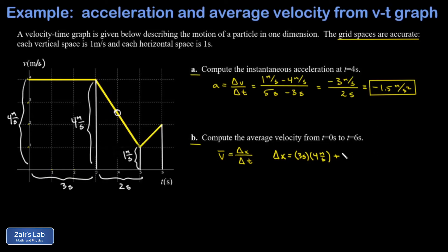And I take the arithmetic mean of those two heights, so that's one half times their sum, one half of four meters per second plus one meter per second, and then times the width of the base which was two seconds.